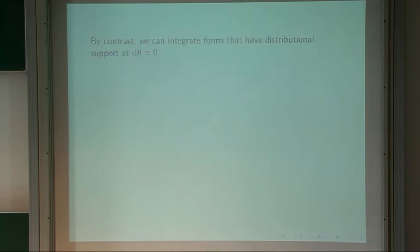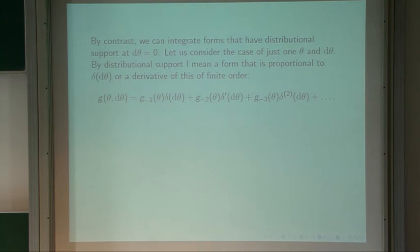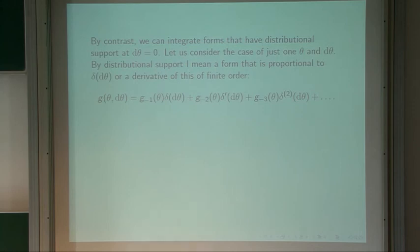By contrast, it's convenient to consider forms with distributional support at d-theta equals zero — what Bernstein and Leites considered. For one theta and one d-theta, by distributional support I mean a form proportional to delta(d-theta) or a derivative thereof to finite order. So a general function of theta and d-theta of this class has terms: a coefficient times delta(d-theta), another coefficient times delta'(d-theta), a second derivative, and so on. Unlike the polynomial case, this expansion has no stopping place — you can go on differentiating delta(d-theta) as often as you wish.